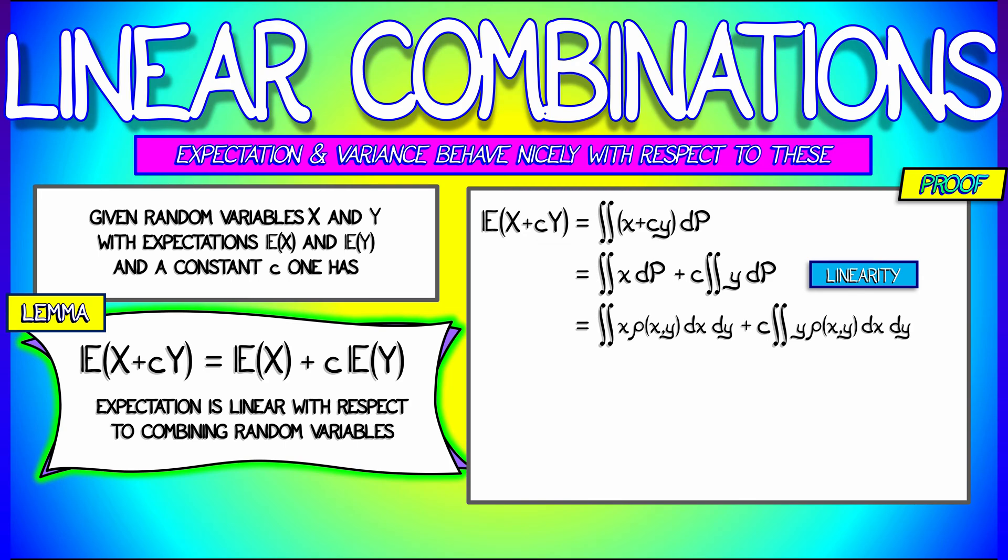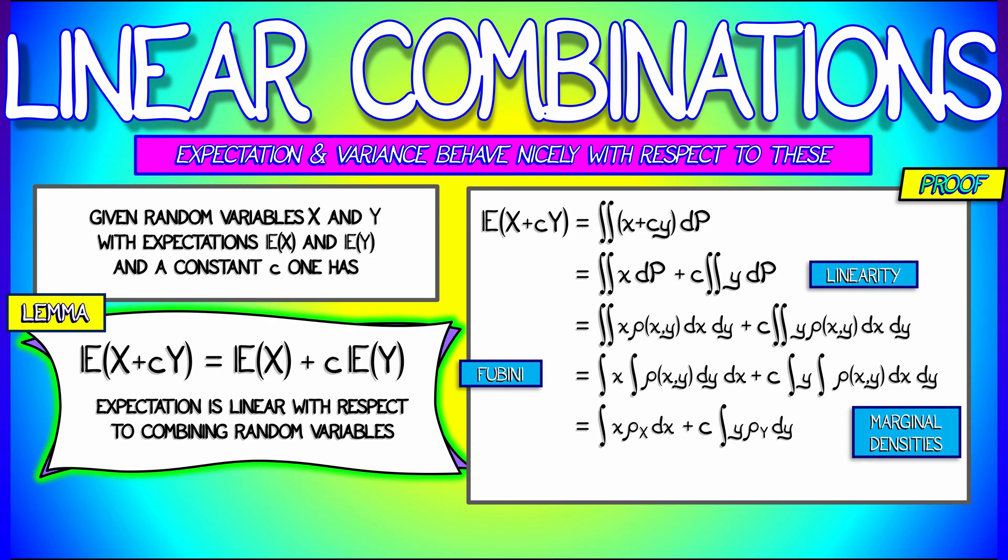Here is where the Fubini theorem comes in, because depending on whether I'm integrating X or Y, I'm going to arrange the order of integration so that I wind up revealing the marginal density integrals within there. So in the end, this expectation is really just the integral of X times rho_X dX plus c times the integral of Y times rho_Y dY. That is exactly the result that we were looking for—that's the expectation of X plus c times the expectation of Y.